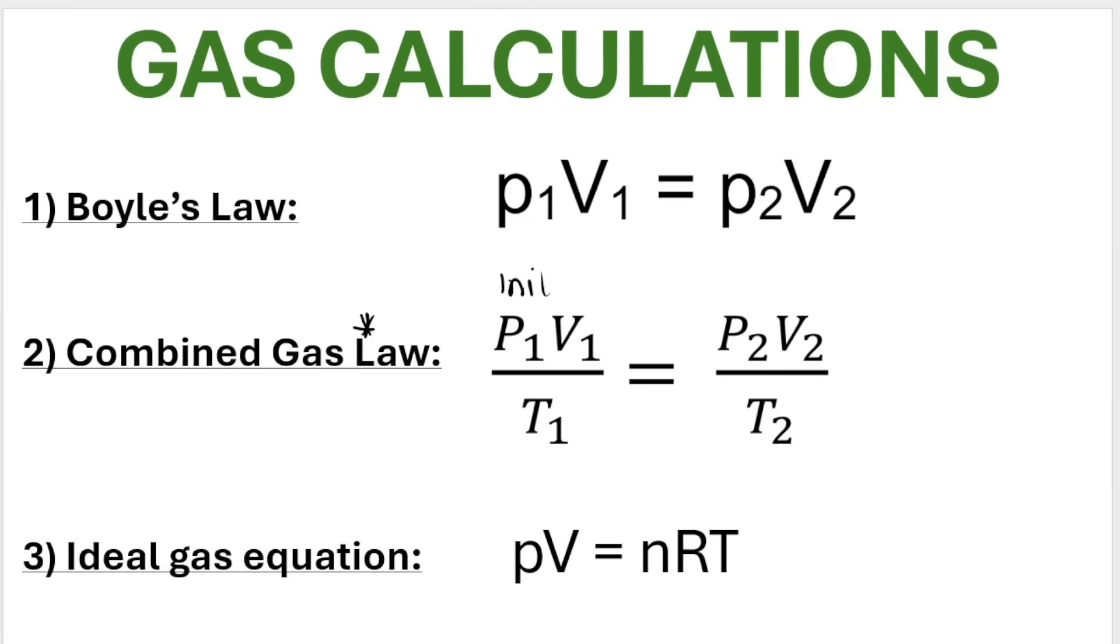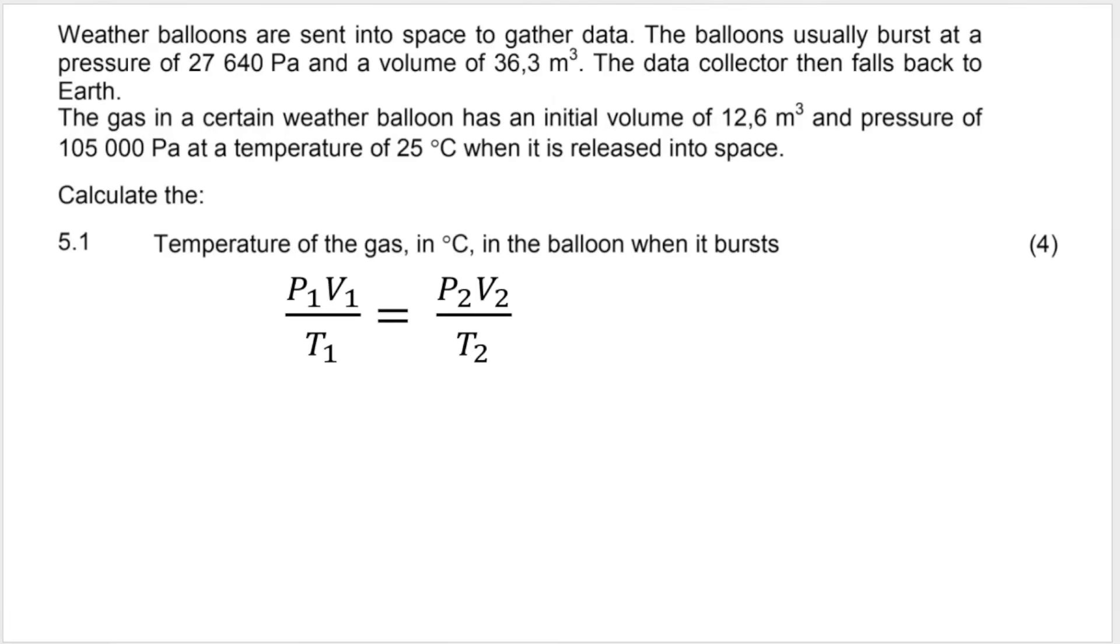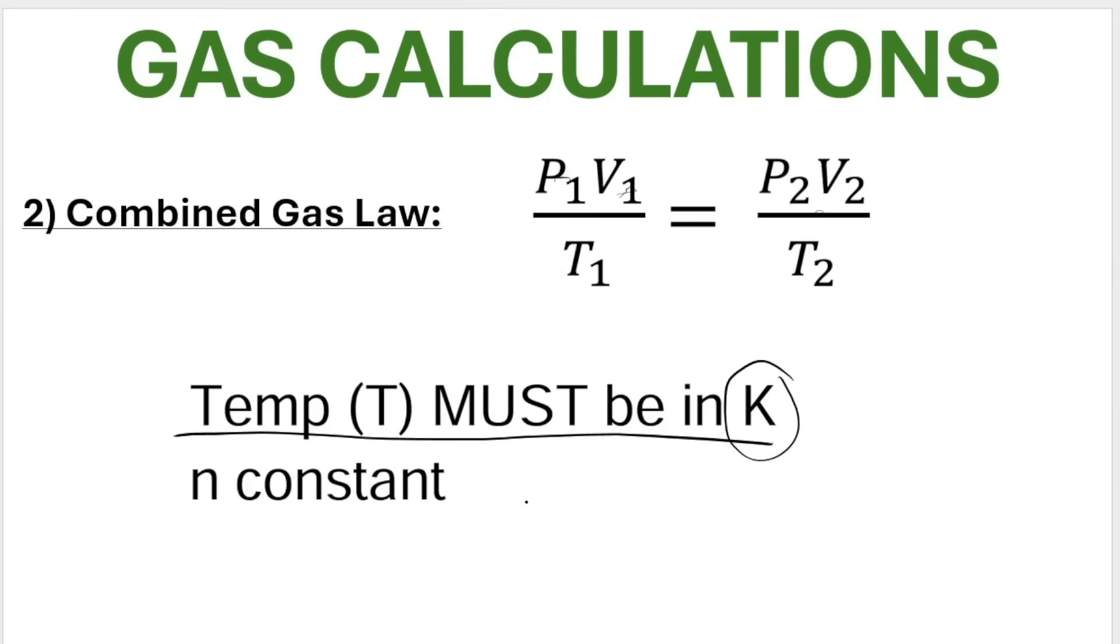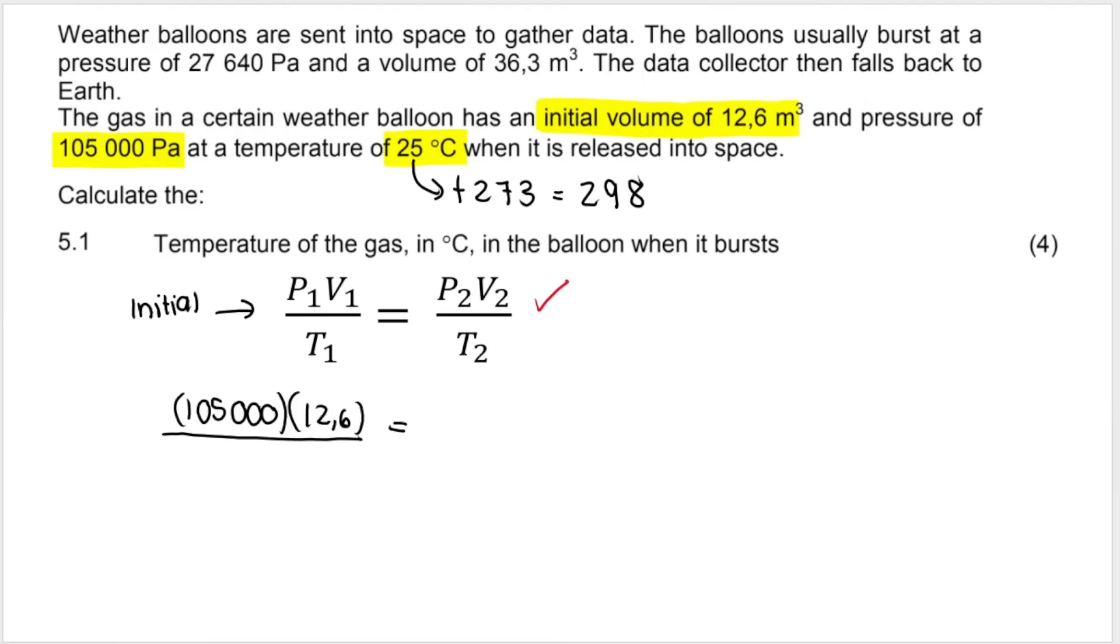So this would be, for example, the initial readings that they gave us, and this over here would be the readings when the balloon bursts. So when answering this question, the first thing that I need to do is write my formula down. Then on the left-hand side, I'm going to write all the data that corresponds to the initial scenario, which is everything that I've highlighted in yellow, and I'm going to substitute it in. Just remember that for the combined gas law equation, temperature must be in Kelvin. And how do we convert from degrees Celsius to Kelvin? We add 273. That gives me a temperature of 298 K, which I'll be substituting into my initial side of the formula, along with my initial pressure and volume.